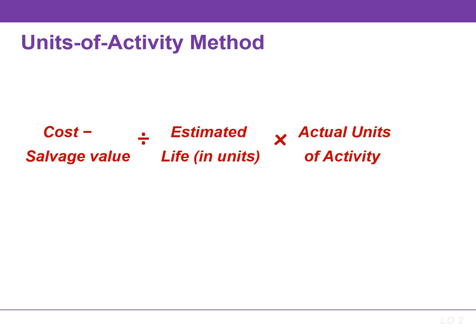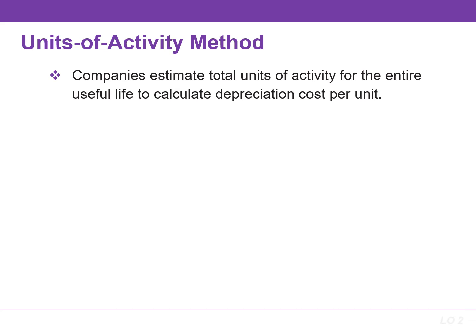Calculating depreciation under the Units of Activity method is similar to straight line. The only difference is that the life is expressed in terms of an activity rather than years. Under this method, a company estimates the total units of activity for the entire useful life and divides that amount into the depreciable cost to determine the depreciation cost per unit. It then multiplies the depreciation cost per unit by the units of activity during the year to find the annual depreciation expense for that year.